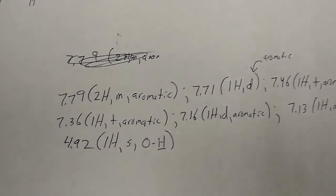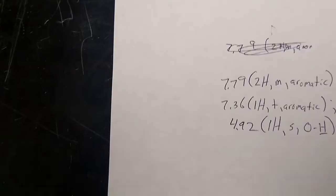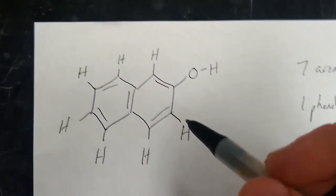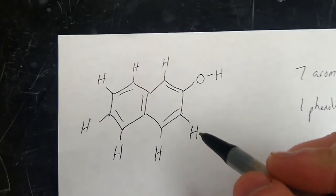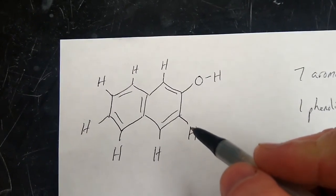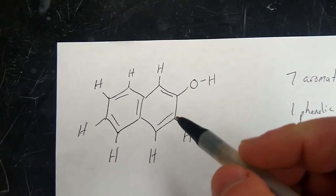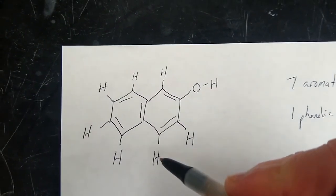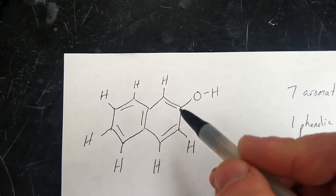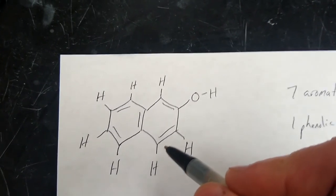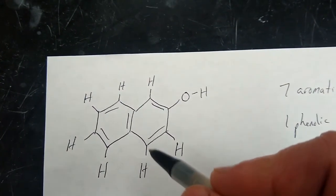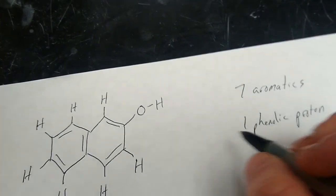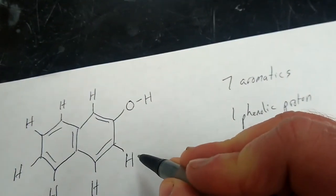You can kind of predict the splitting on some of these. It gets complicated, but like the signal for this proton, you look at how many protons are on the neighboring carbon. So attached to this one you've got one proton, and attached to this one you don't have one. However many neighbors, however many protons the neighbor has, you add one to it. So one neighbor plus one would mean this signal you should see a doublet.